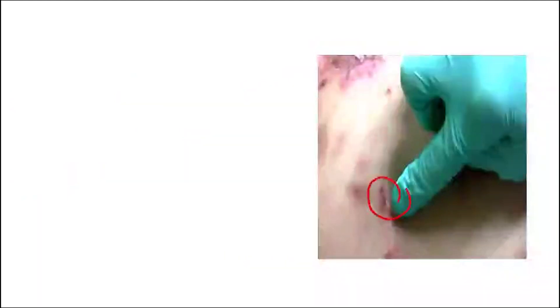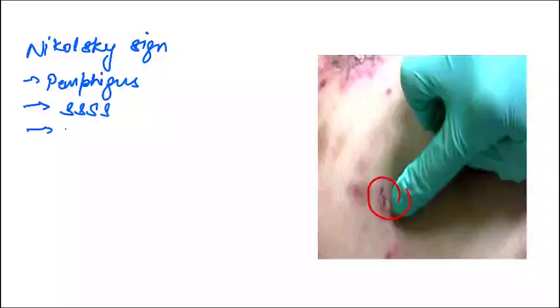Let's discuss. As you can see, this is Nikolsky sign. You can see a flaccid blister here. Pressure is put on the lateral side of the blister on the normal skin, and what we see is a shearing off of the normal skin. It is seen in pemphigus, staphylococcal scalded skin syndrome, and Hailey-Hailey disease.